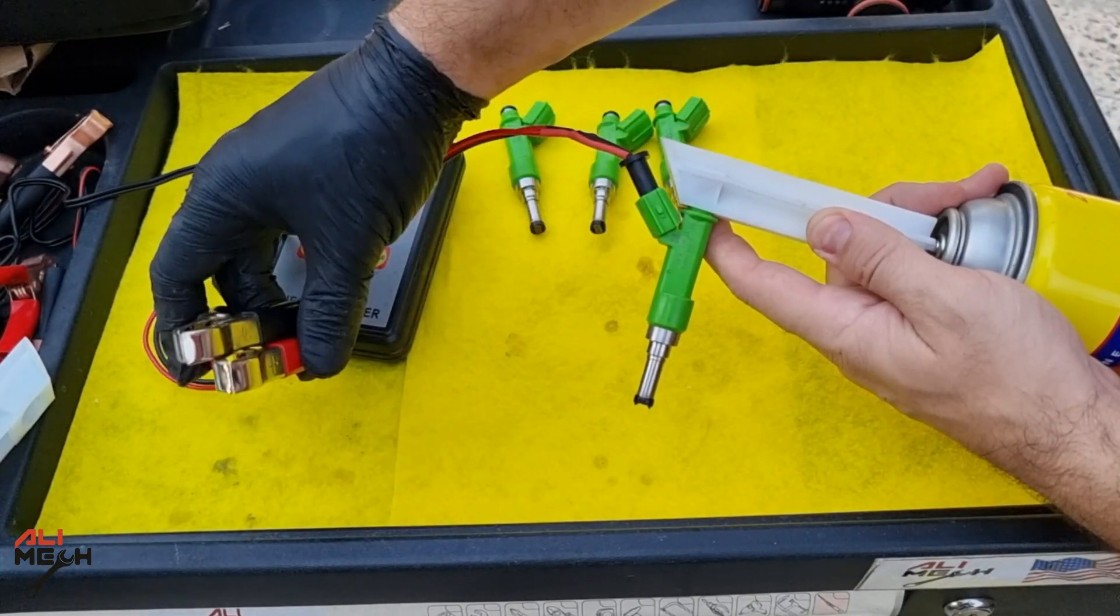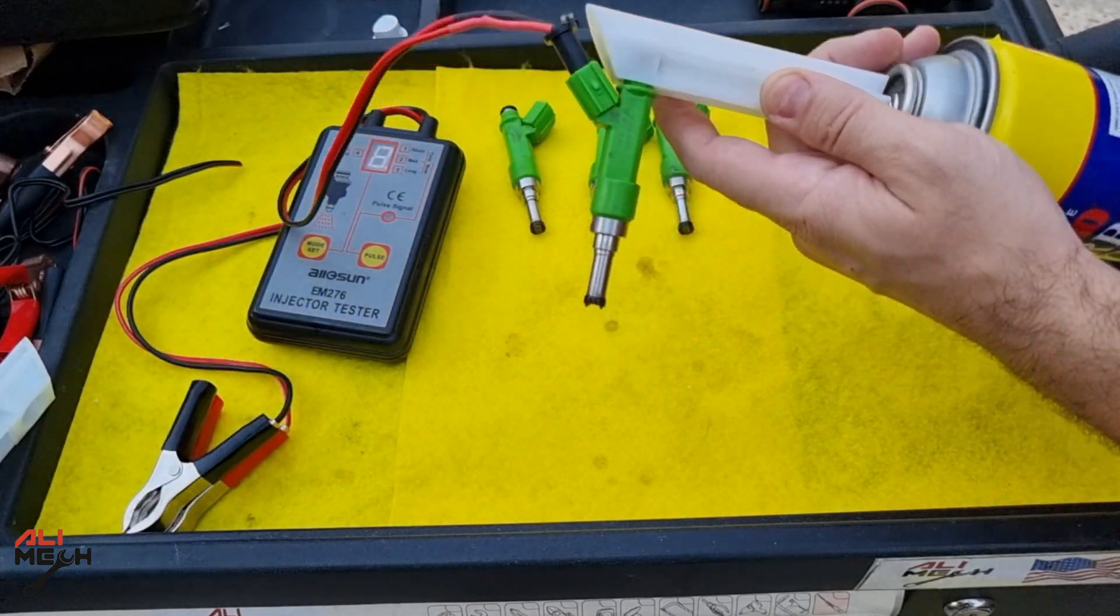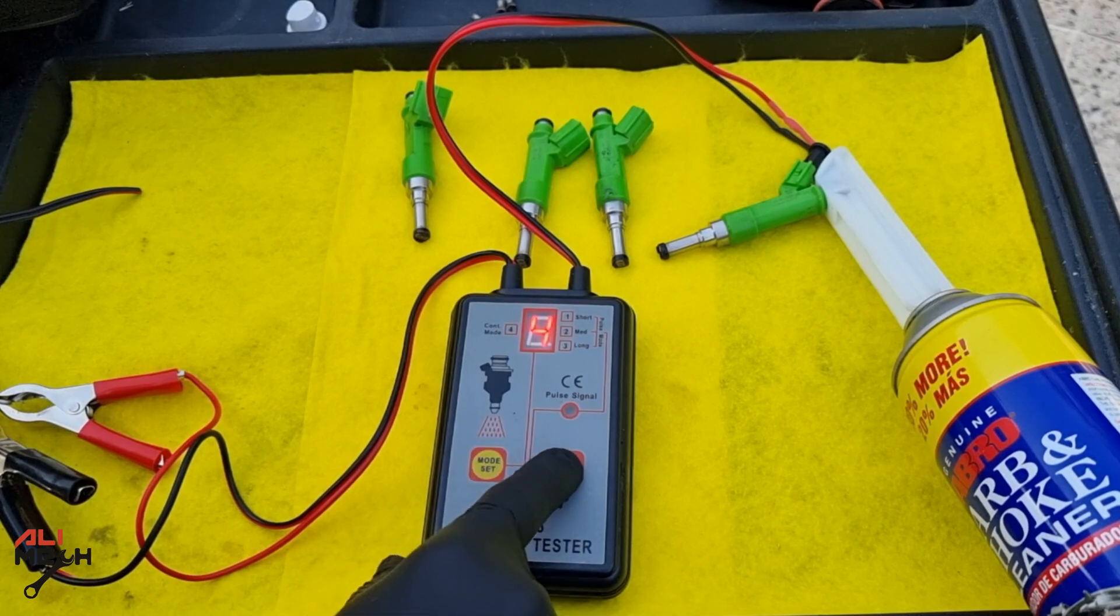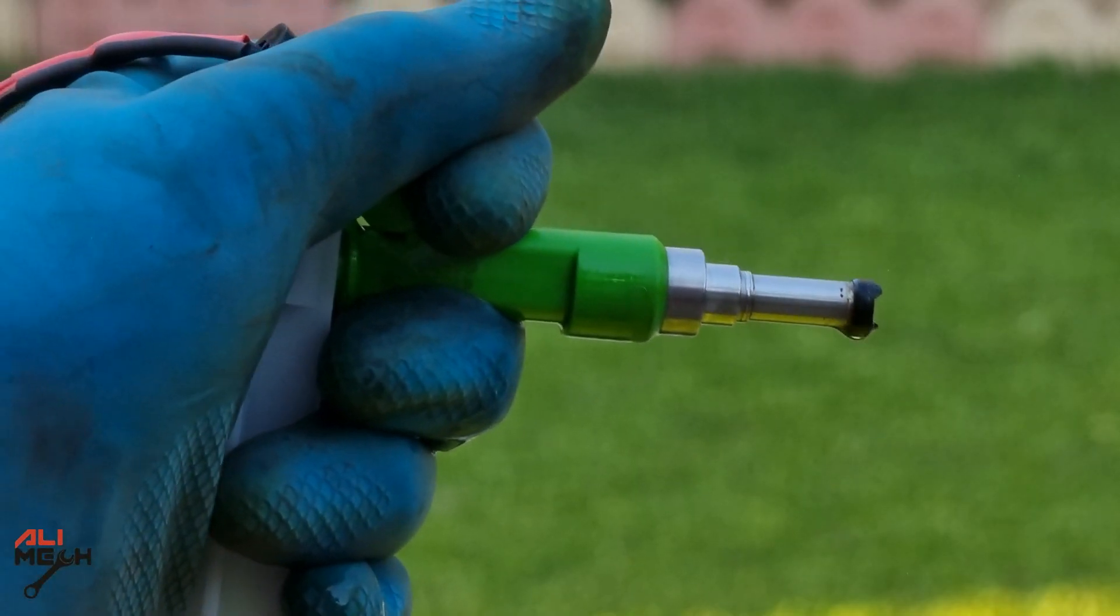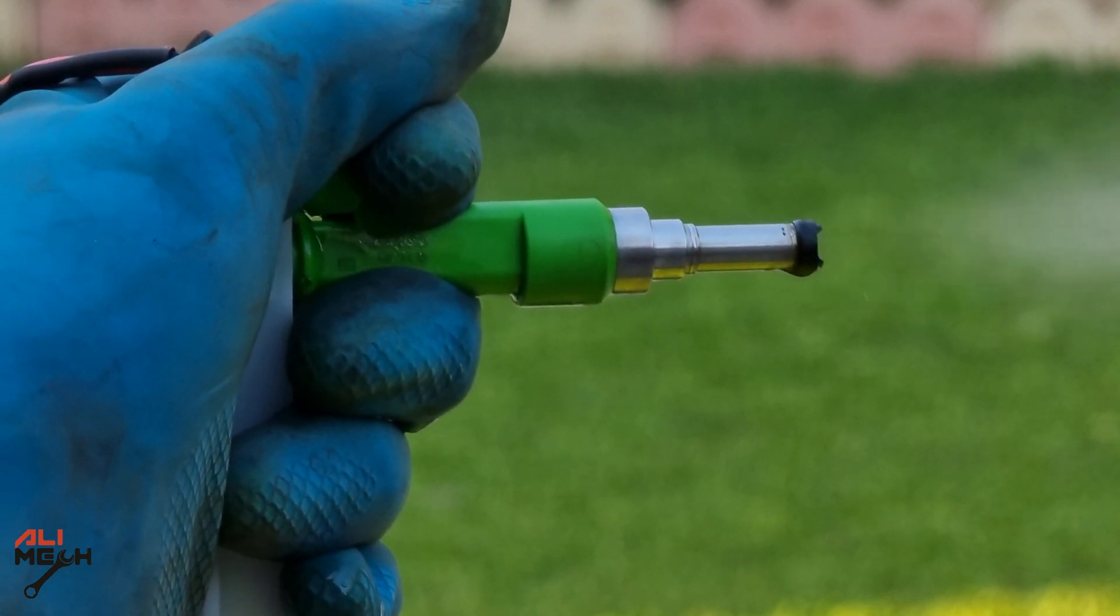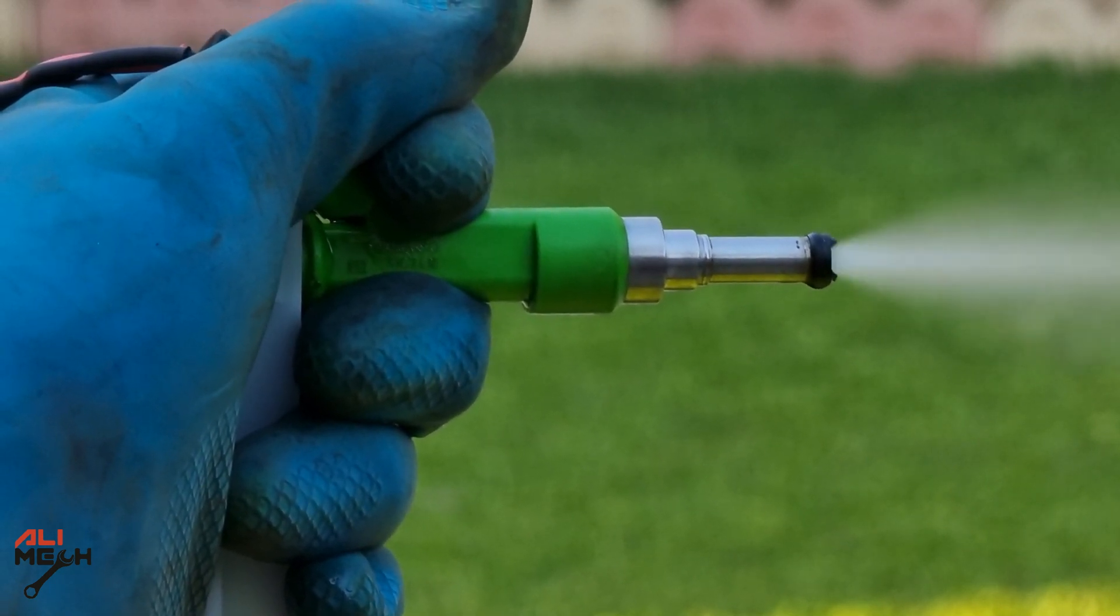Now we can connect these two to a car's battery and I like to use mode 4 which is continuous pulse. Then hold the nozzle and push it down on the carb cleaner at the same time. Remember that you have to always hold the fuel injectors otherwise it will pop out.